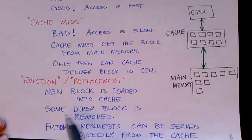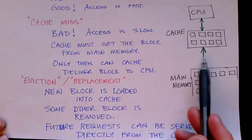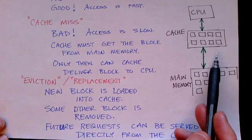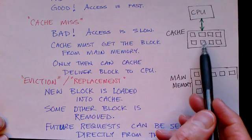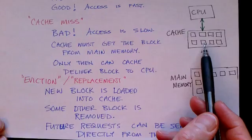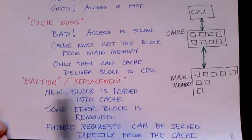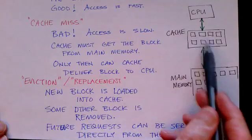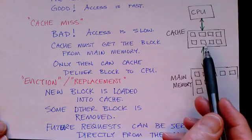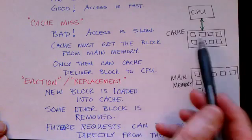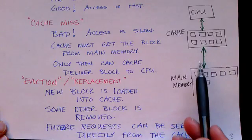But some other block had to be removed. The cache has a fixed amount of storage space, and so whenever a block is loaded from the main memory into the cache, some block has to be removed and we call that eviction. So some block is chosen for eviction or replacement, and that block will no longer be in the cache.